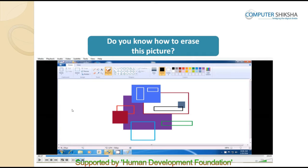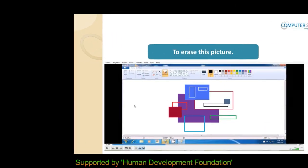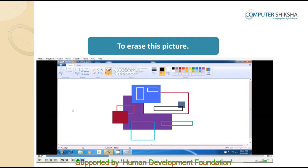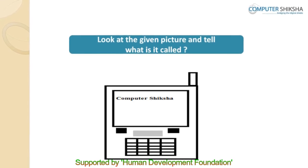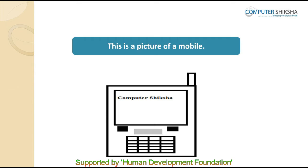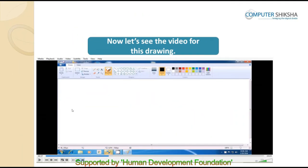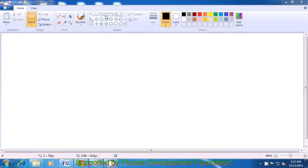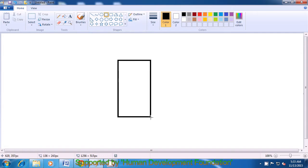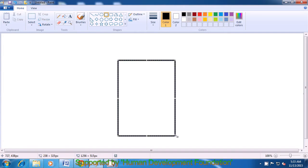Do you know how to erase this picture? Use the method you have already learned to erase it. Look at the given picture and tell what it is called. This is a picture of a mobile phone. All of you make this picture on your own. If you face any difficulties, carefully watch the video and learn how to make this picture. First, select the rectangle tool and come to the drawing area. We have already selected color 1 as black and drag a rectangle like this.